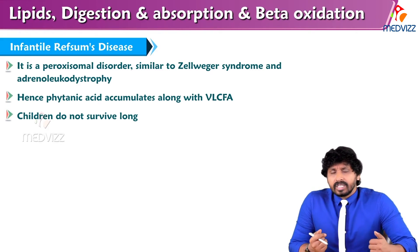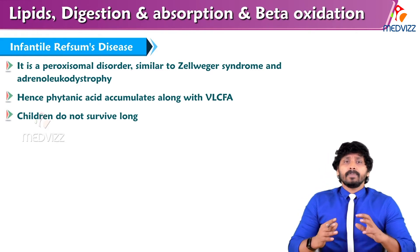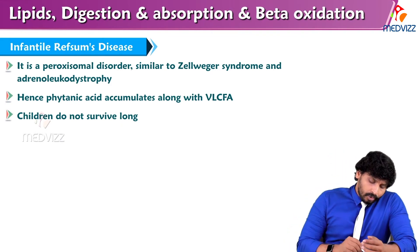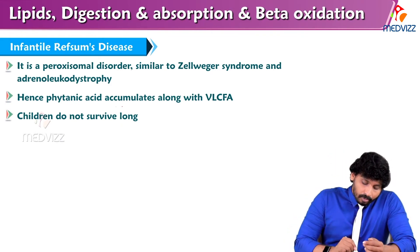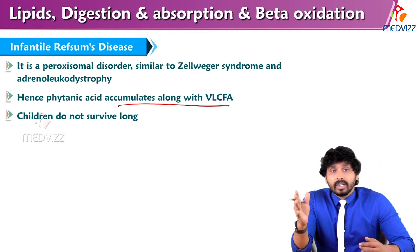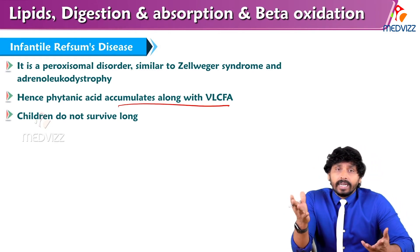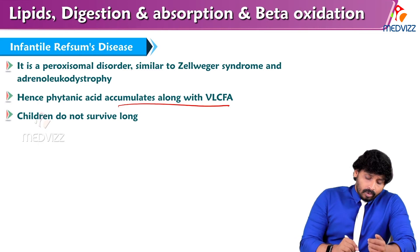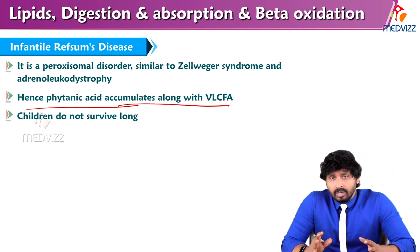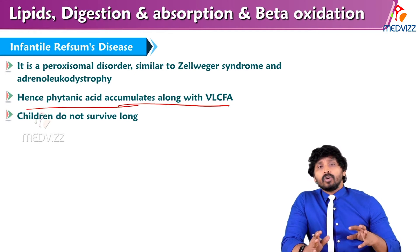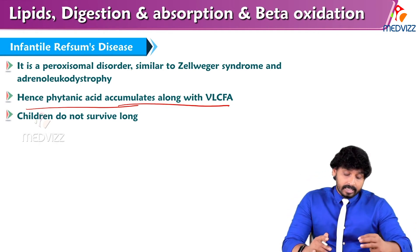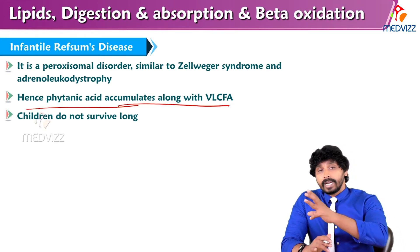Infantile Refsum disease: what is it? It is a peroxisomal disorder similar to Zellweger syndrome and adrenoleukodystrophy. Hence phytanic acid accumulates along with very long chain fatty acids (VLCFA). Infantile Refsum disease is a peroxisomal disorder similar to Zellweger syndrome, with both phytanic acids and very long chain fatty acids accumulating.